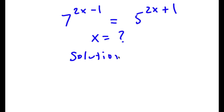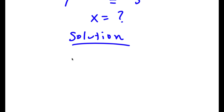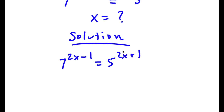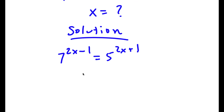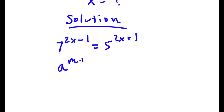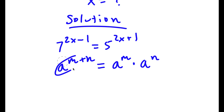So now for our solution, the original equation was 7 to the power of 2x minus 1 is equal to 5 to the power of 2x plus 1. Now, if I have something in the form a to the power of m plus n, this is equal to a to the power of m times a to the power of n. So this essentially distributes across both exponents.